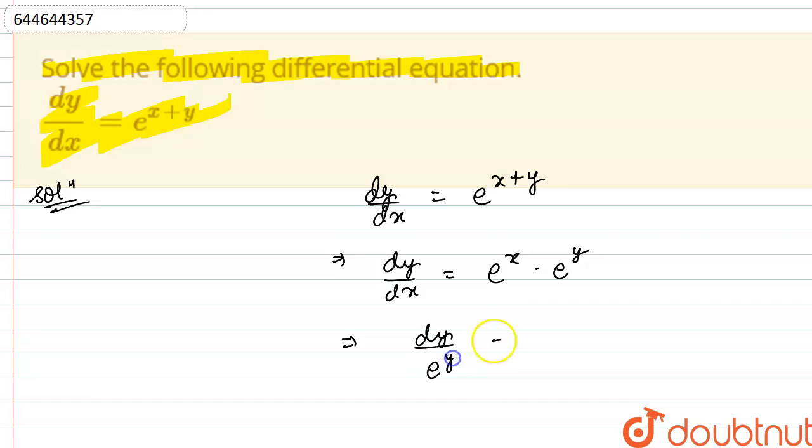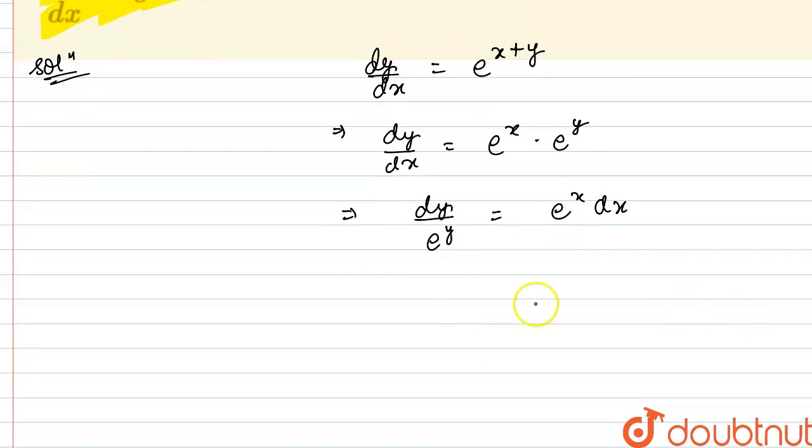I will get dy by e raised to the power y equals e raised to the power x into dx, or I can also write this as e raised to the power minus y dy equals e raised to the power x dx.